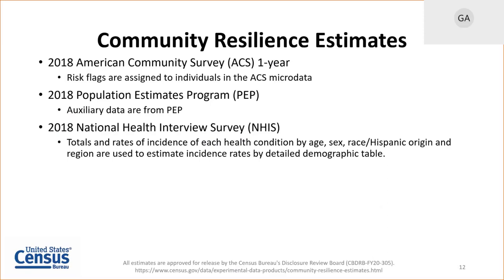We also combine this data with 2018 Population Estimates Program data, which is our auxiliary data. The Census Bureau's PEP produces estimates of the population for the U.S. and Puerto Rico using data on births, deaths, and migration, and calculates population change since the most recent decennial census. We also use data from the 2018 National Health Interview Survey from the National Center for Health Statistics at the CDC. We probabilistically assign each health condition based on age, sex, race, Hispanic origin, and region.